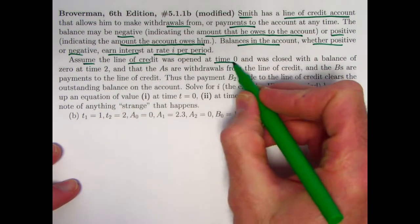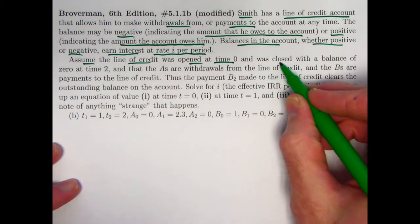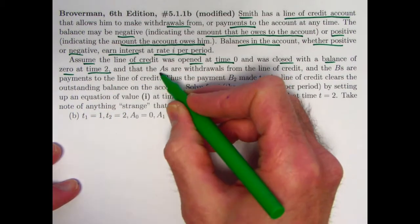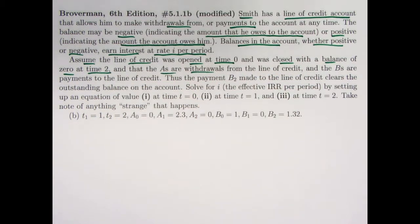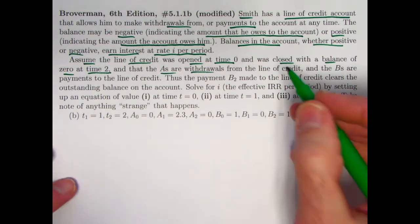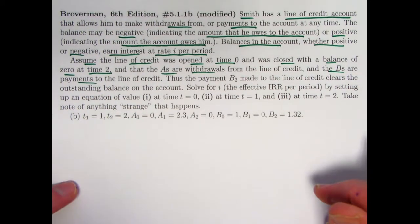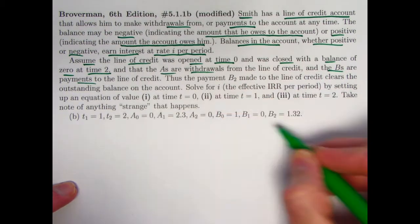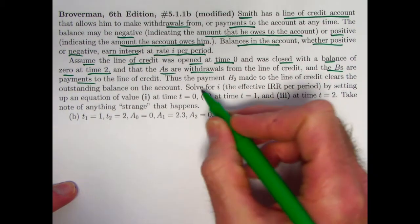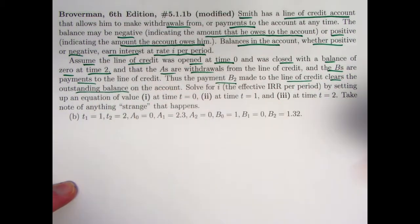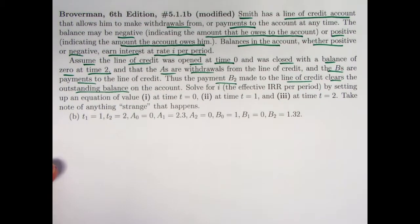Balances in the account, whether positive or negative, are set up to earn interest at a rate of I per period. The period is not specified, but you could pretend it's months. Let's assume the line of credit was opened at time zero and closed with a balance of zero at time two. In what you see down here, the A's are withdrawals, so Smith is taking money out of the account. Sort of think of that as a positive thing towards Smith. And the B's are payments, money going out from Smith, a negative payment effectively.